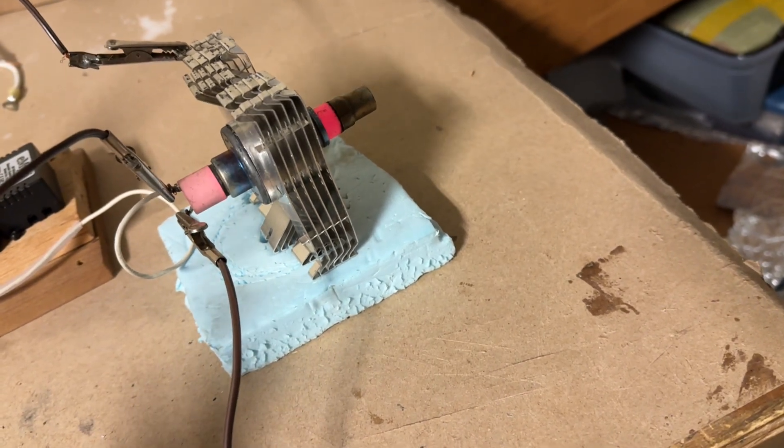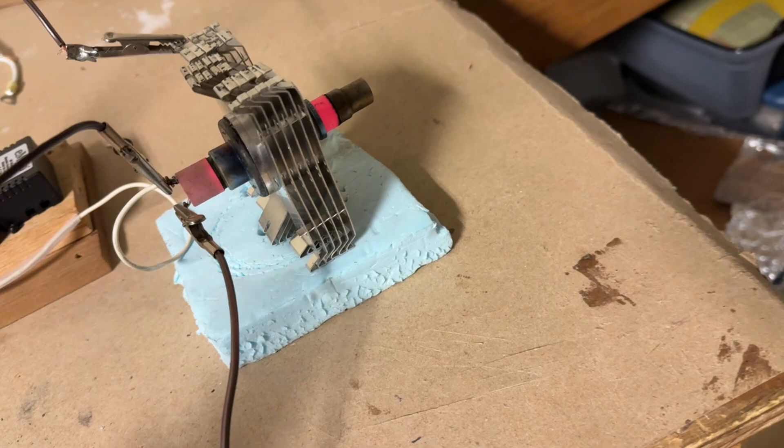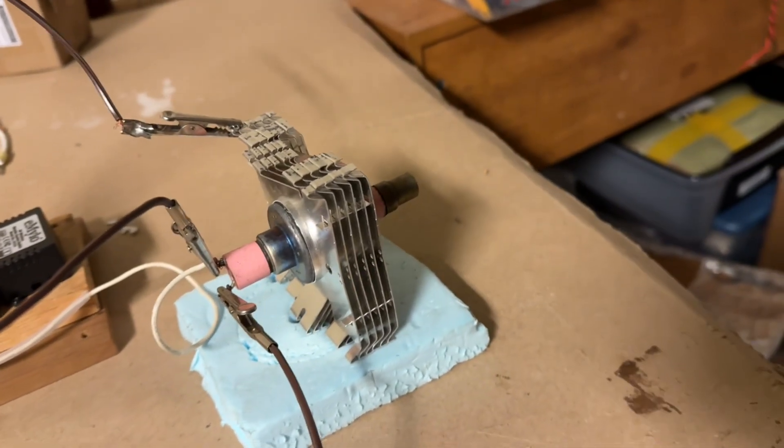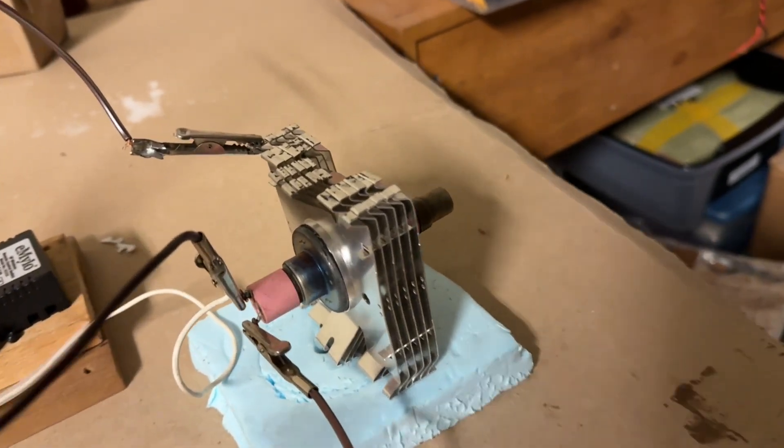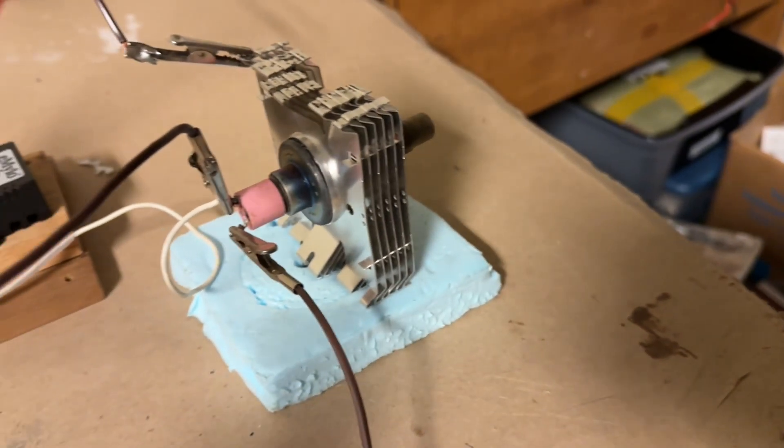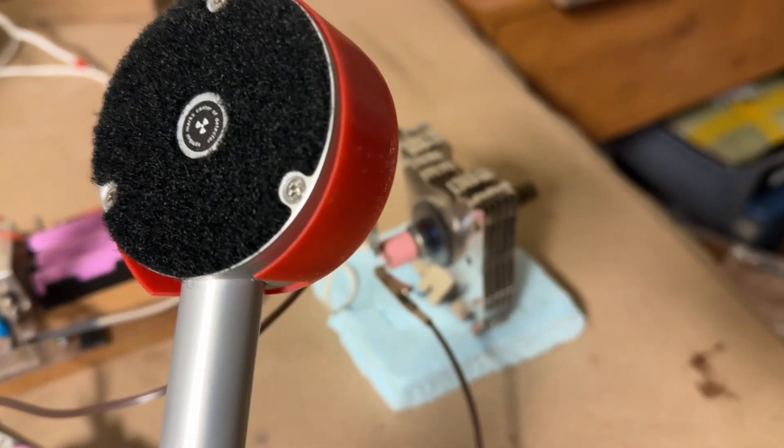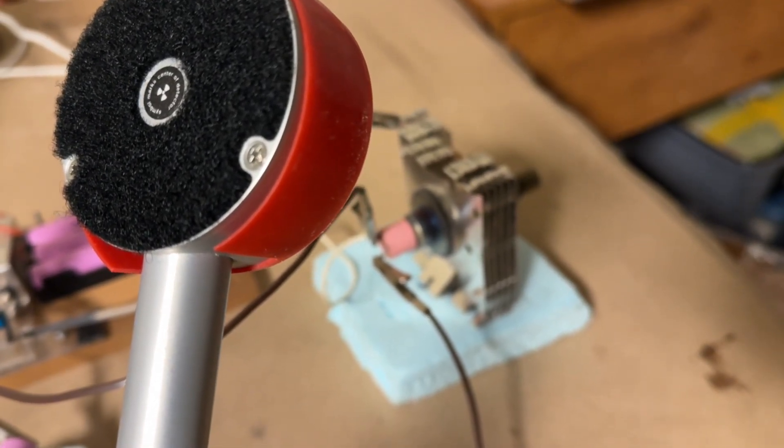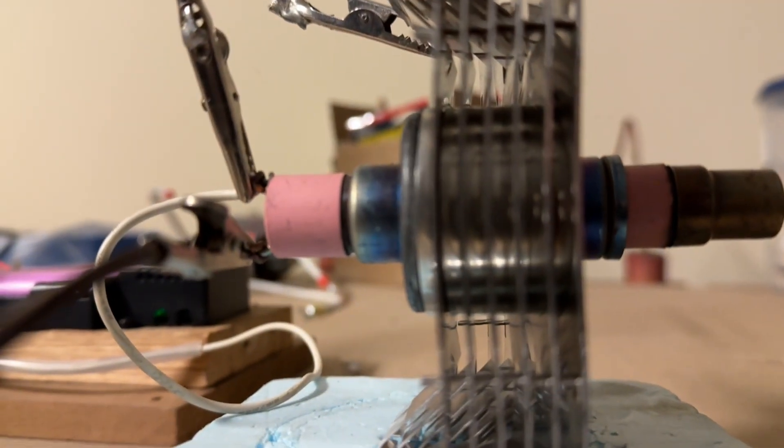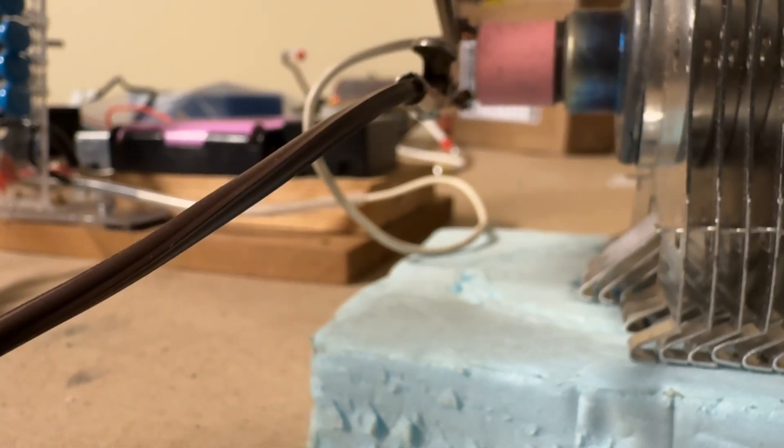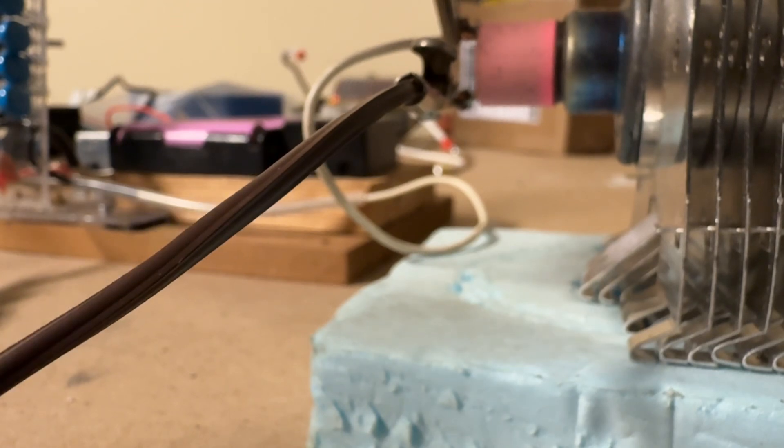Now let's turn the filament off. Filament is now disconnected. Now let's see what we're getting. As soon as the filament comes on, we lose all x-ray production.